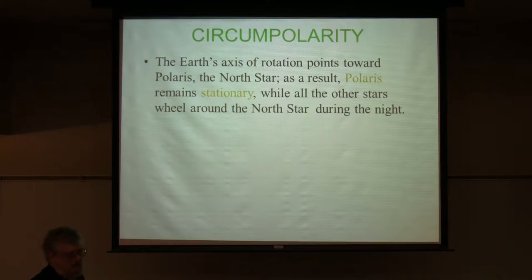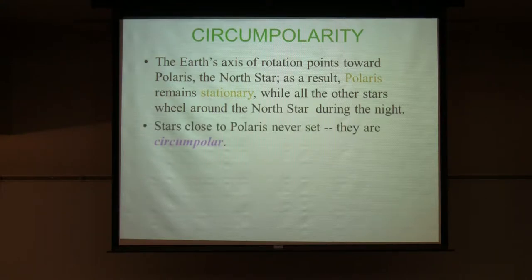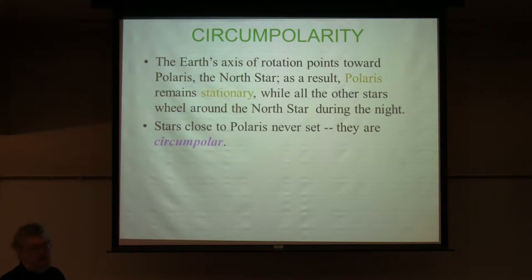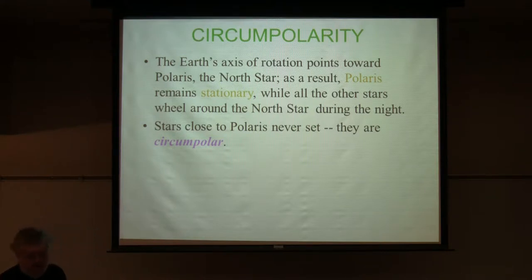If you start rotating the disc on your planisphere, you'll see that Polaris remains in the same spot in the northern part of the sky while other stars rise and set. The ones close to Polaris just circle around it — that's because it's directly above the North Pole of the earth. The stars in the Little Dipper — Polaris is at the end of the handle — are always above the horizon here. They're so close to Polaris that as they make that circle, they don't ever dip below the horizon.